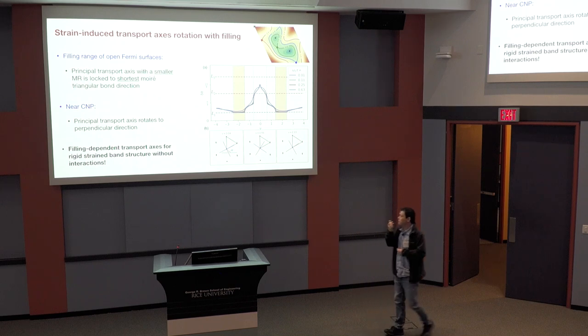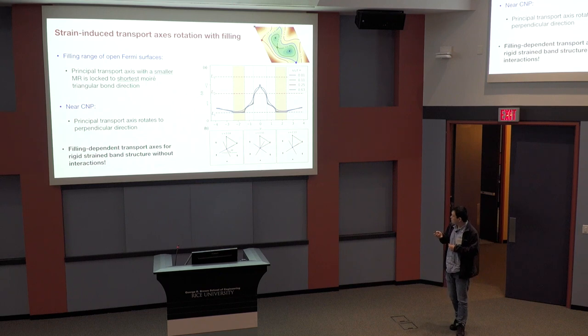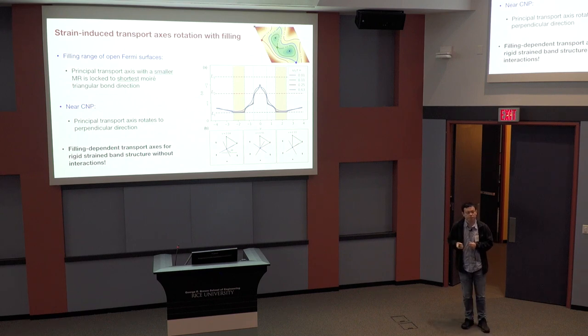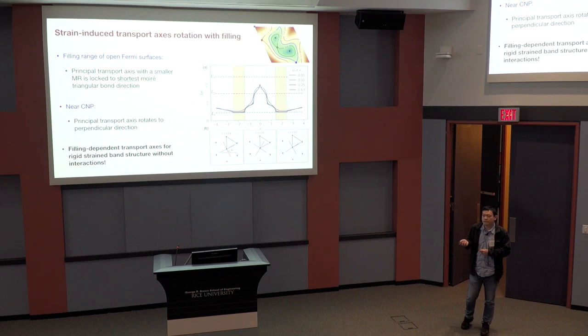So this is the most interesting finding of our work, which is that if I just look at how this transport principle axis depends on filling, it turns out that even for such a rigid band structure, no interaction effects, no anisotropies in the scattering rate, we still get this dramatic rotation of this principal transport axis. So that suggests that maybe we should try to do a careful re-examination on the strain effects, and try to properly distinguish that compared to the electronic nematic effects, for example.